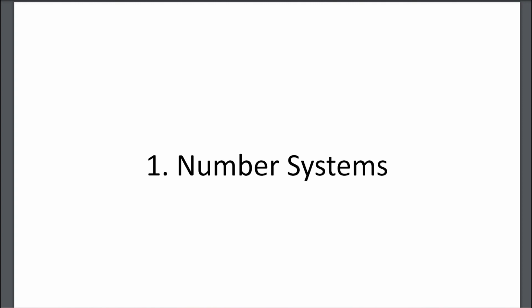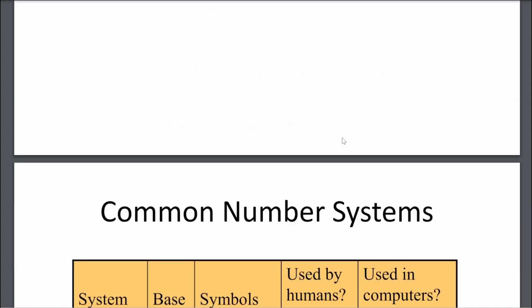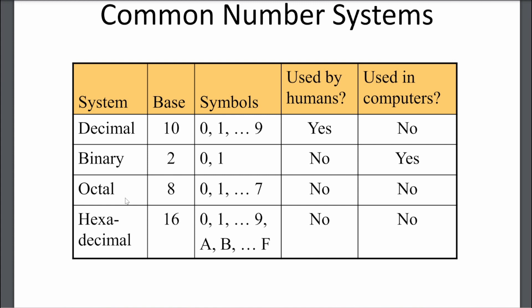So without wasting time, we will start. This is a common table that you have to remember. The number systems have some types, and we are going to study 4 types in the syllabus. First is decimal, second is binary, third is octal, and fourth is hexadecimal.